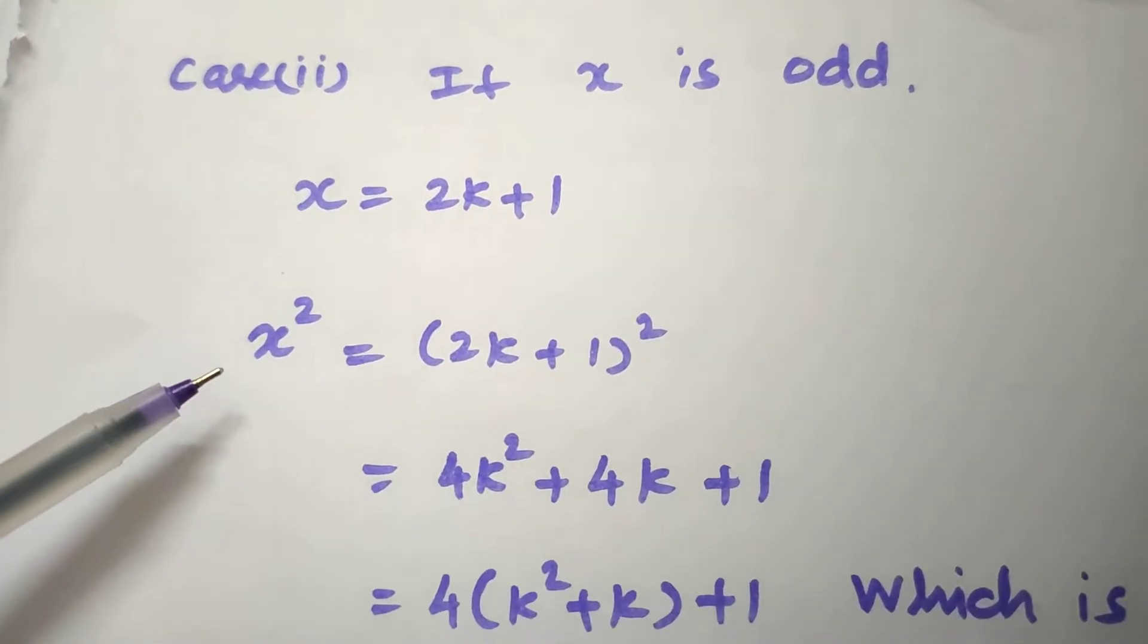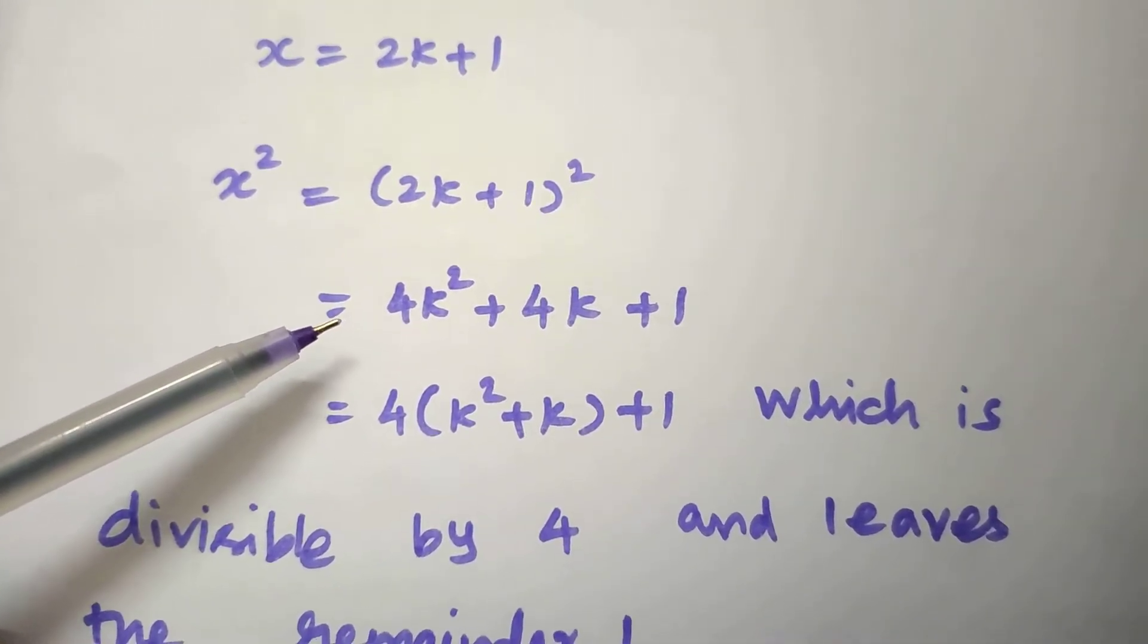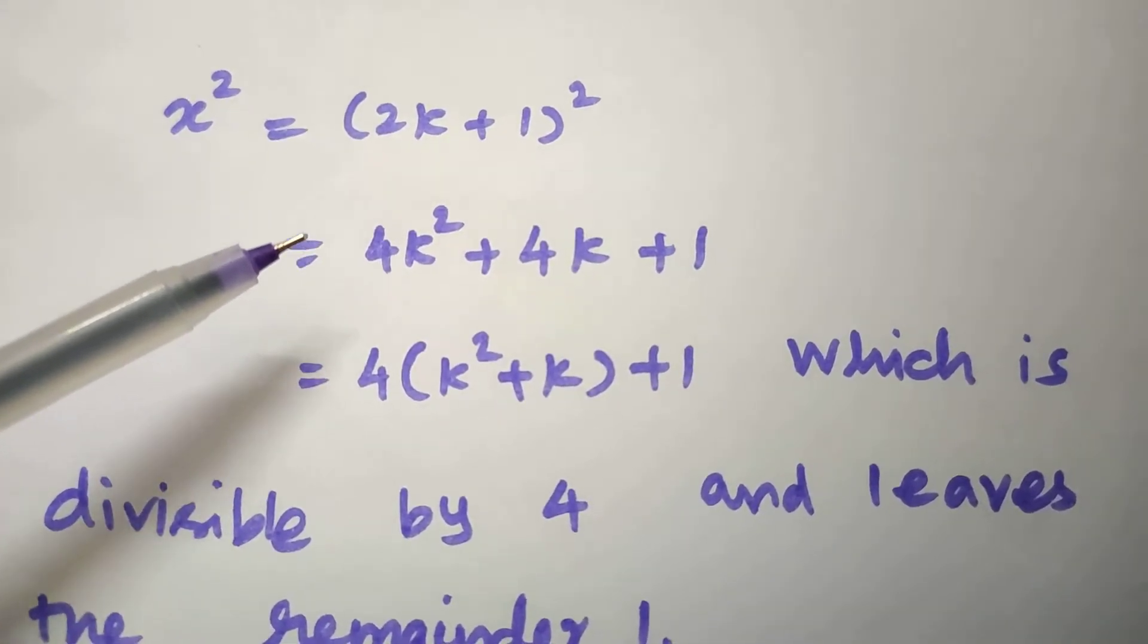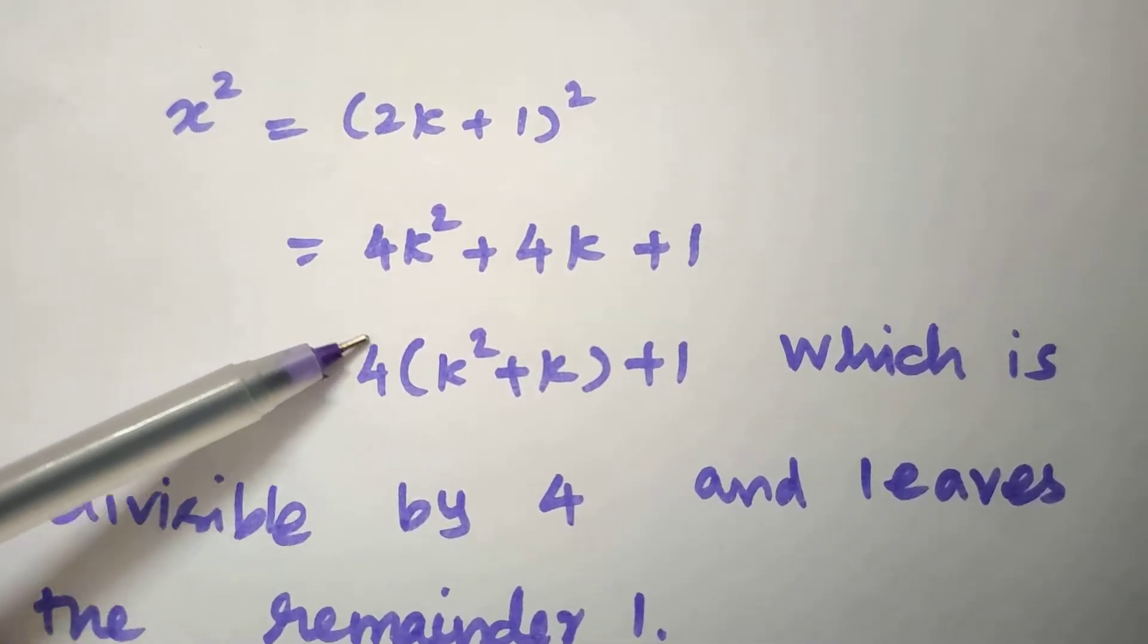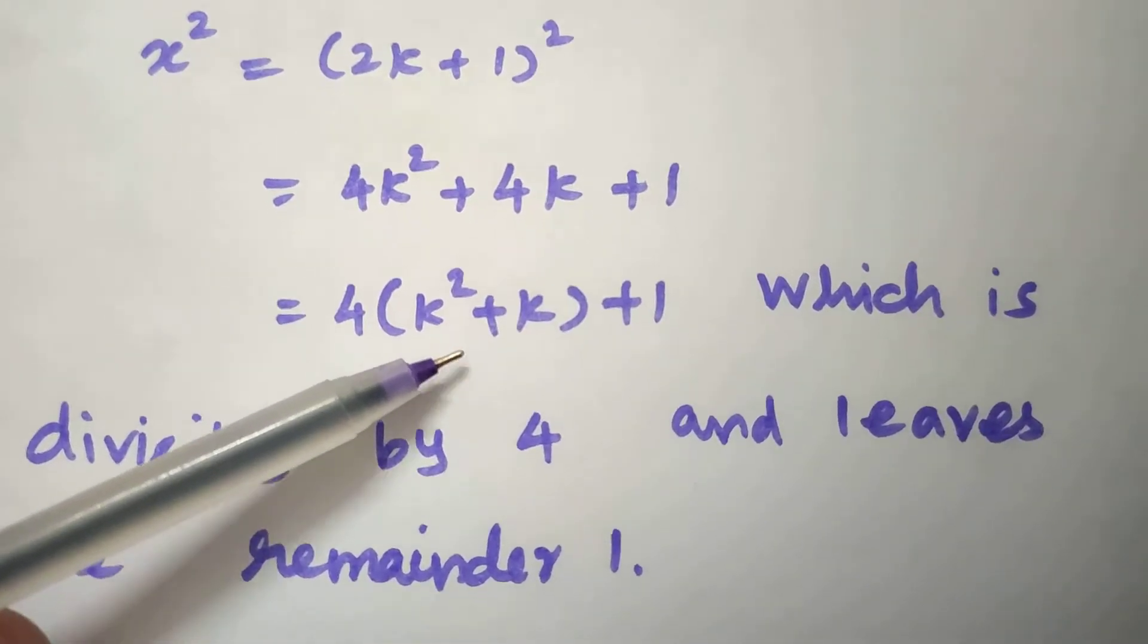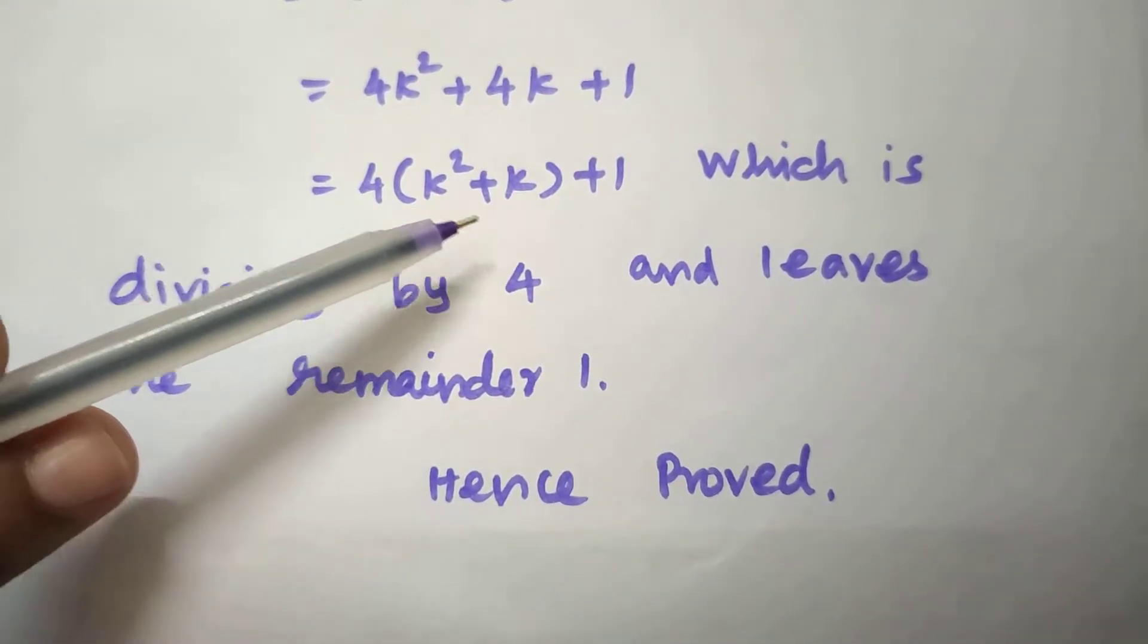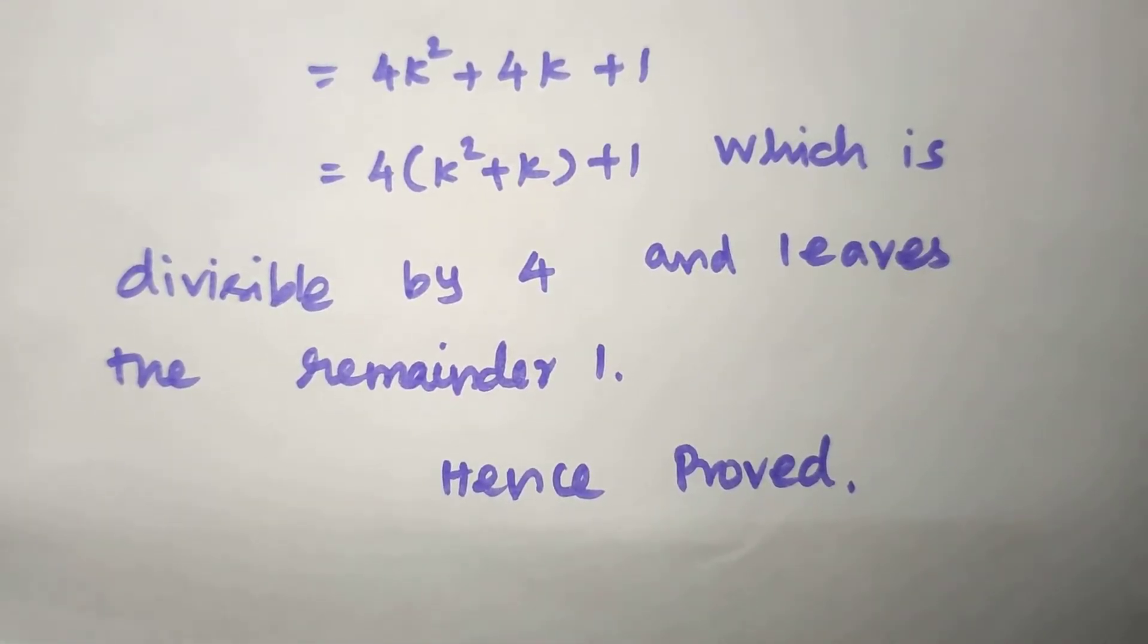So the square is x² = (2k+1)². Applying the (a+b)² formula: a² = (2k)² = 4k², plus 2ab which is 2(2k)(1) = 4k, plus b² = 1² = 1. Taking 4 as common from the first two terms: 4(k²+k) + 1. This is completely divisible by 4, plus 1, which is divisible by 4 and leaves the remainder 1. Hence proved.